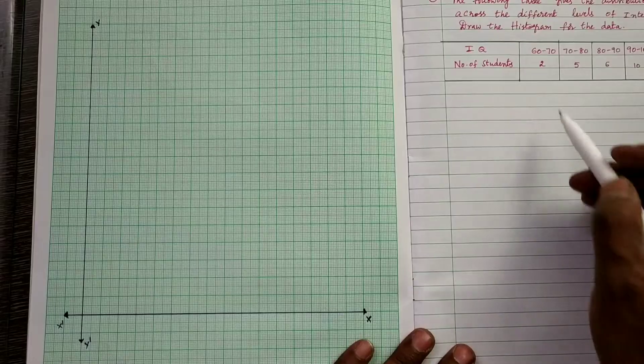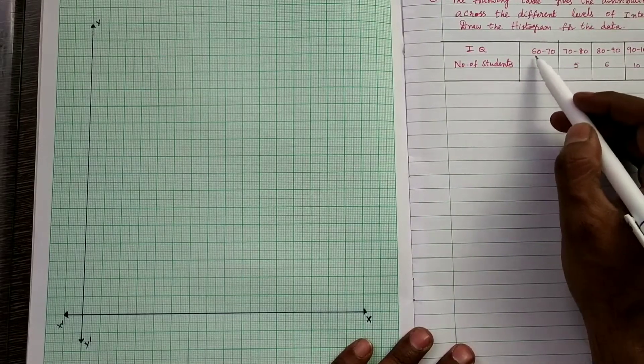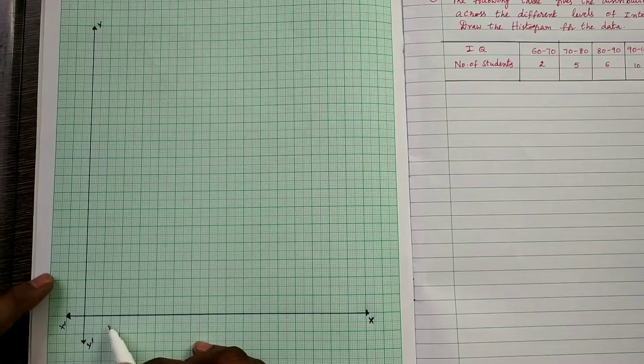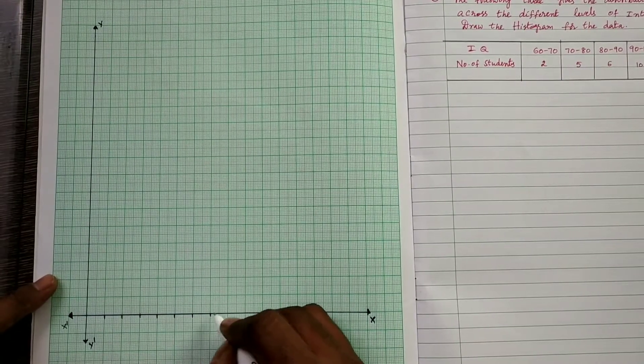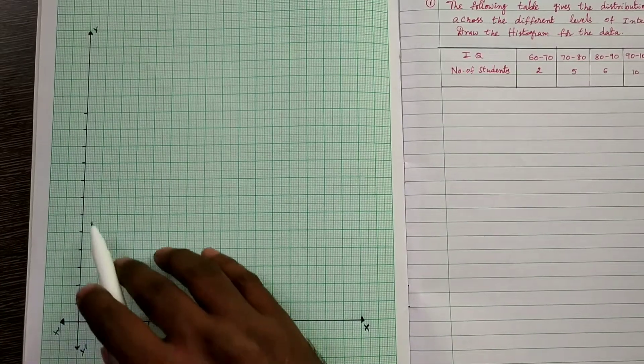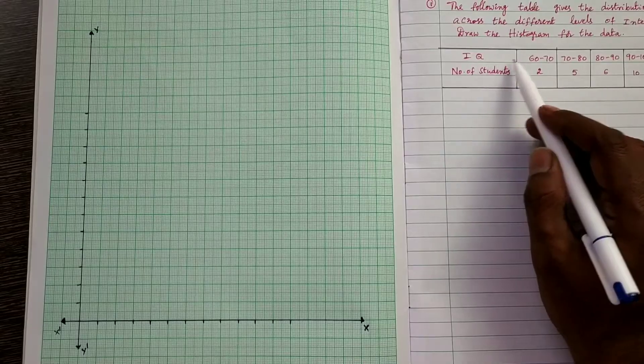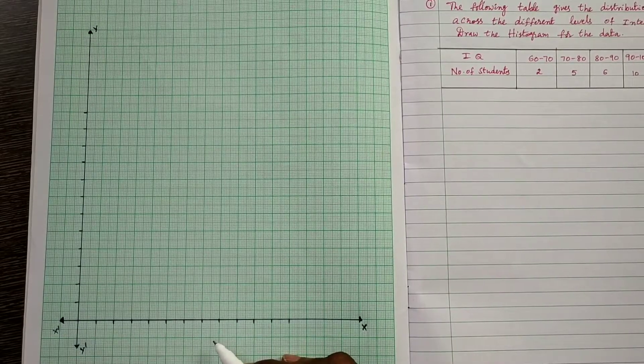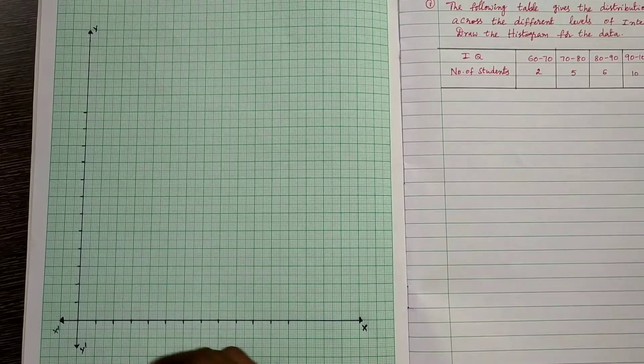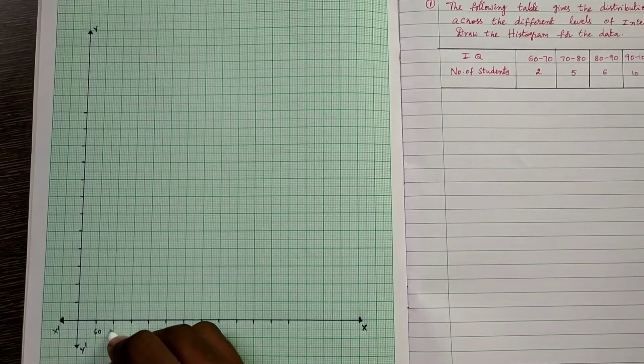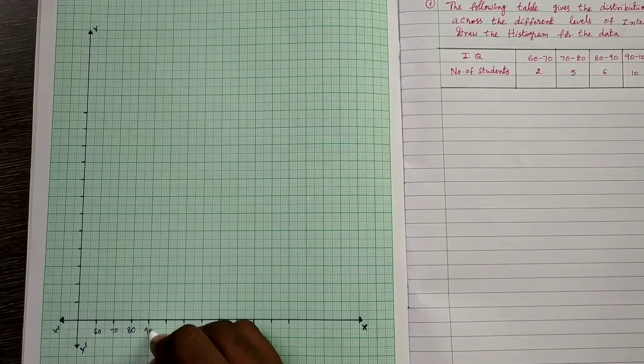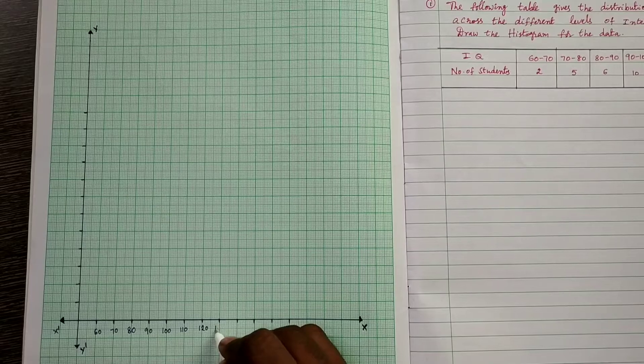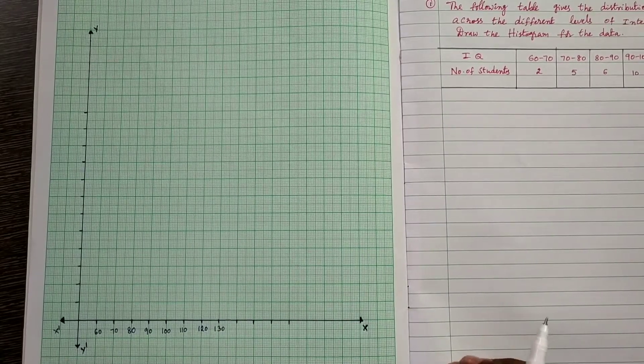Here, given class intervals are 60, 70, 70 to 80. So the difference is 10. 60 to 70, 70 to 80. So take 1 cm as 10 units on the x-axis. On x-axis, mark like this: IQ take on x-axis, first starting with 60 with 10 difference. So on x-axis, take 10 units on every cm. Starting with 60, so keep here 60, 70, 80, 90, 100, 110, 120, 130. So these are the IQ levels.